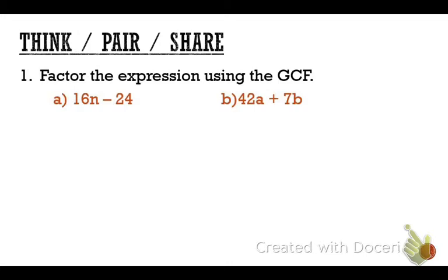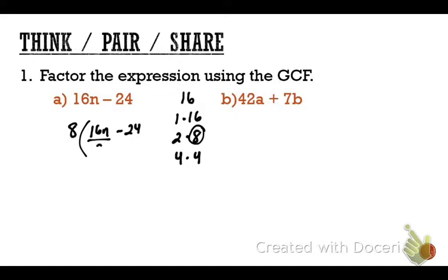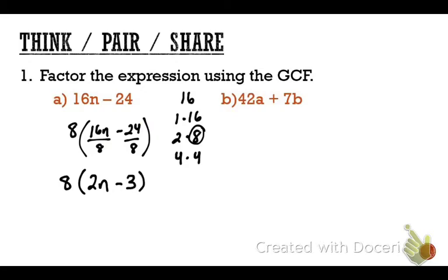About half of you got this right. The GCF of the smallest number — which is 8 — means we factor 8 out of 16N minus 24. Divide both terms by 8. 16N divided by 8 is 2N — many people forgot to keep the N family. And negative 24 divided by 8 is negative 3. So the answer is 8(2N − 3).